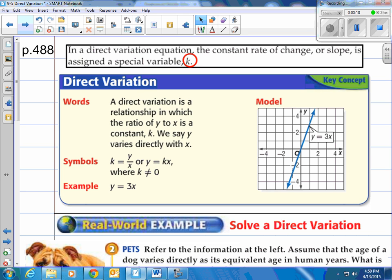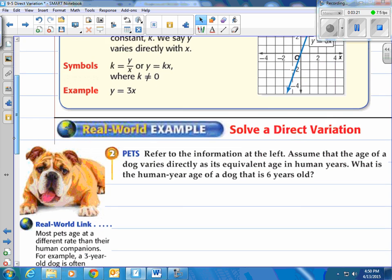An example would be something like y equals 3 times x. They show a little model of that in our coordinate graph over here. That line has a name y equals 3x. Constant of variation is 3.